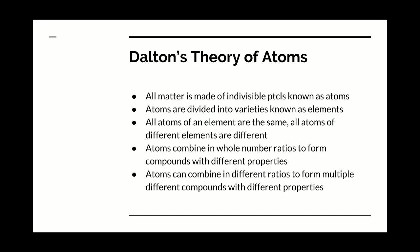He concluded that all matter is made of indivisible particles known as atoms. These atoms are divided into varieties known as elements. All atoms of an element are the same. All atoms of different elements are different. He didn't specify how they're different, he just said that they are different. You don't need to explain everything with a theory, just enough that the theory works to explain stuff.